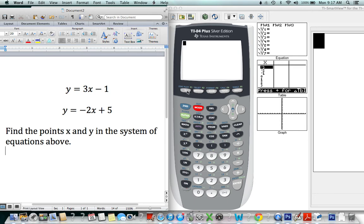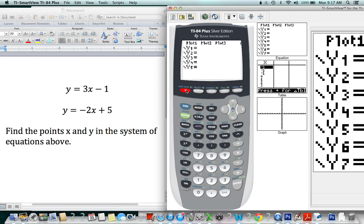In order to do this, we first need to graph our lines. We start off by going to the Y equals button and type the equations in. One equation will go in Y1. We click down to go to the other line, and the other equation will go in Y2.